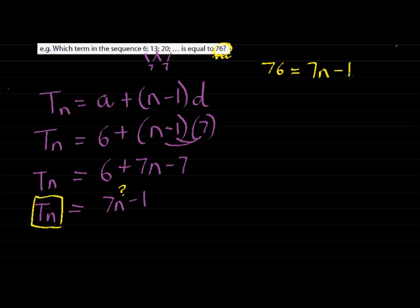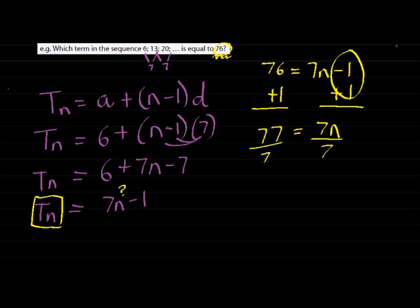To solve it, let's just get n on its own, so we add 1 on both sides. And by doing so, we get 77 is equal to 7n. Divided by 7 on both sides, and I get 11 is equal to n. That means that the 11th term will be equal to 76.